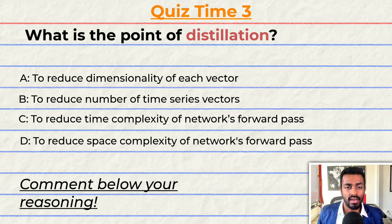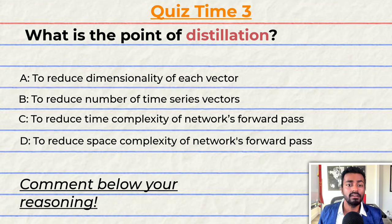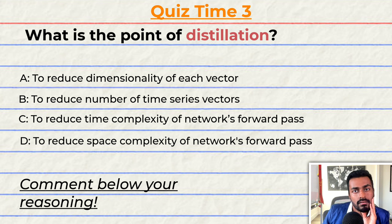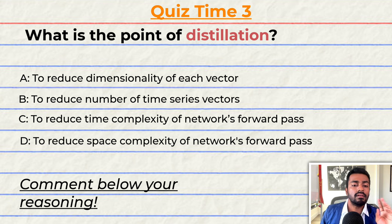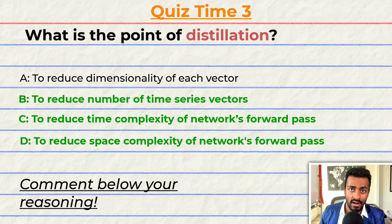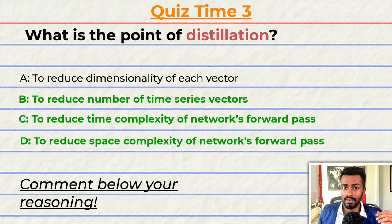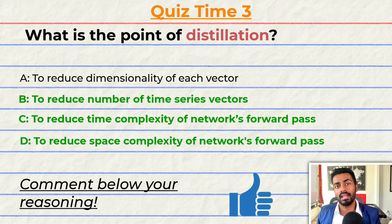Quiz time! What is the point of distillation? A: to reduce the dimensionality of each vector. B: to reduce the number of time series vectors. C: to reduce the time complexity of the network's forward pass. Or D: to reduce the space complexity of the network's forward pass. Note that multiple options may be correct. The correct answers are B, C, and D. Why are B, C, and D correct? Tell me your reasoning in the comments below and let's have a discussion. If you think I deserve it, please give this video a like.